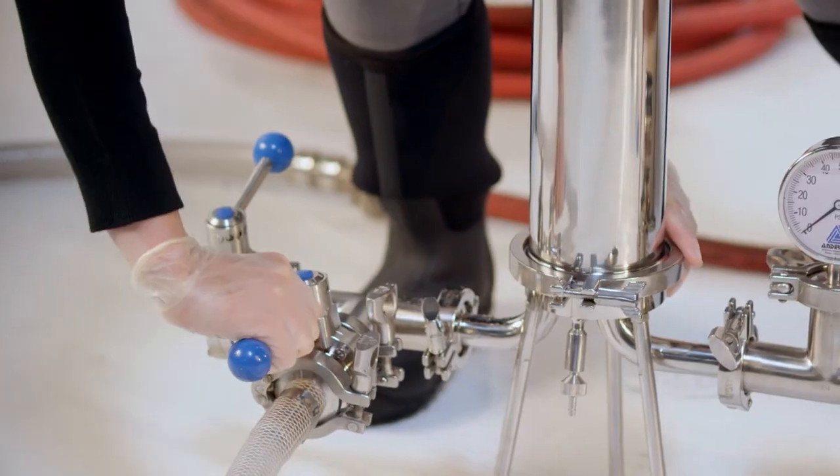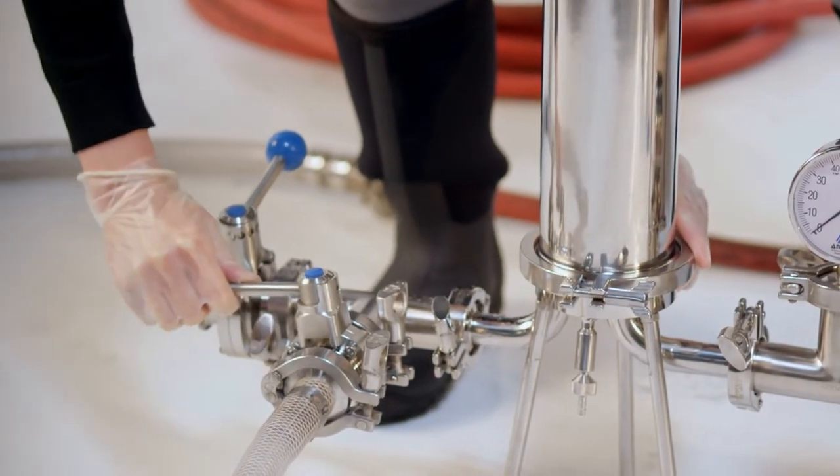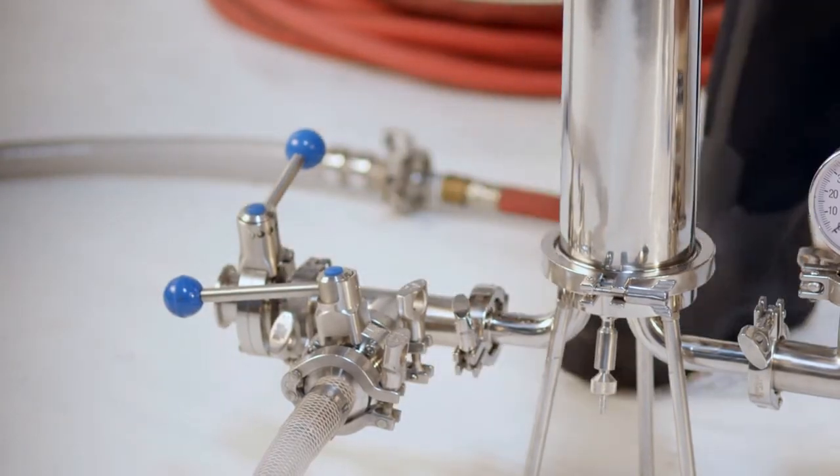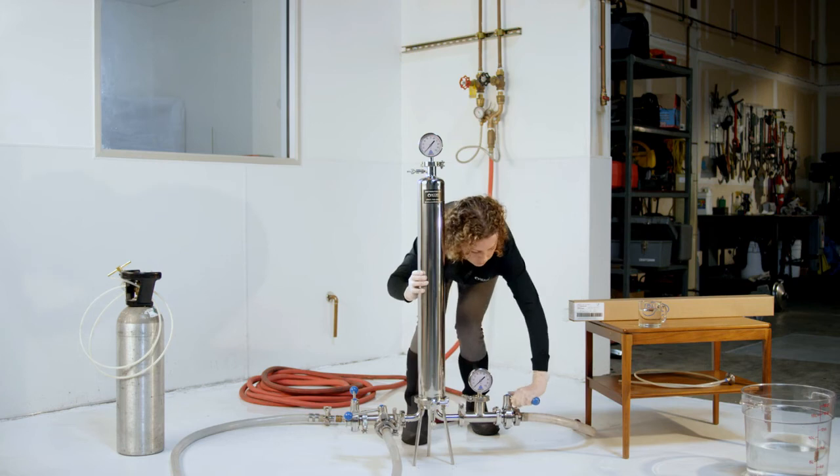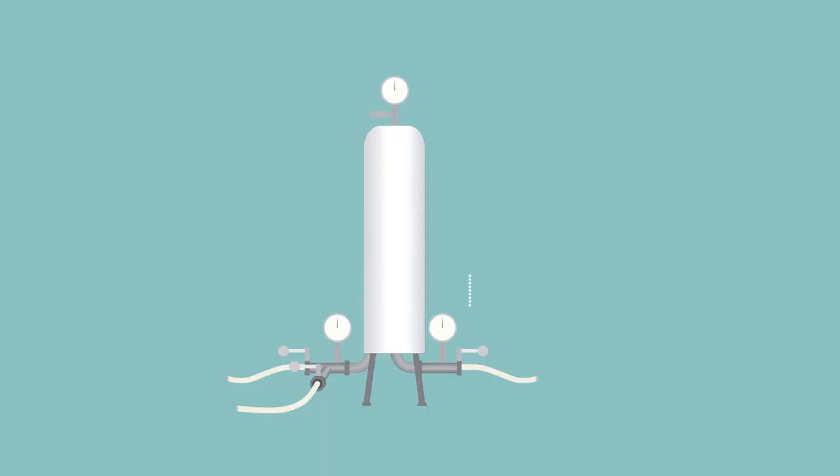If using a depth filter or integrity pass membrane, you can now commence filtration. Drain any residual rinse or sanitation water, then close drains and water discharge lines. Close product outlet valve and with vent open, slowly introduce wine through product inlet valve. When wine arrives at vent, close vent and open product outlet valve.